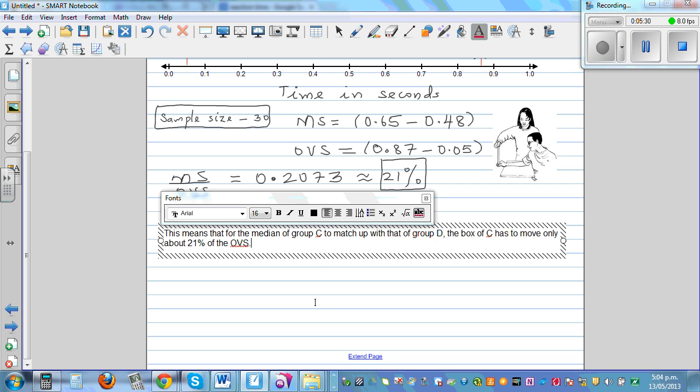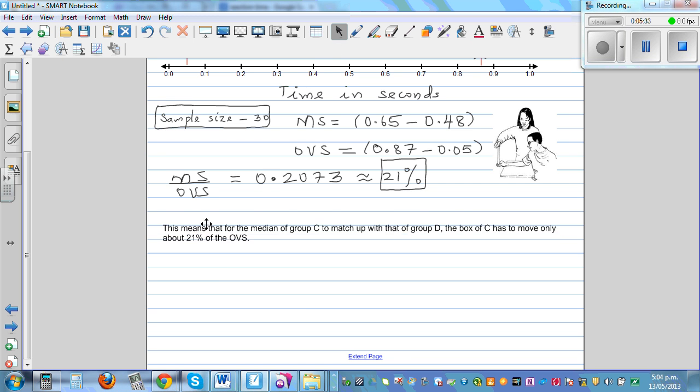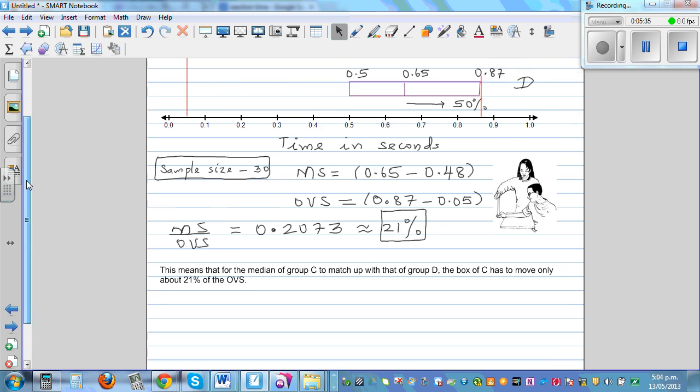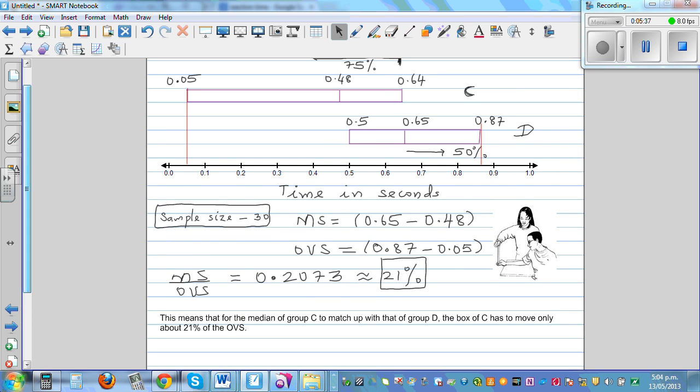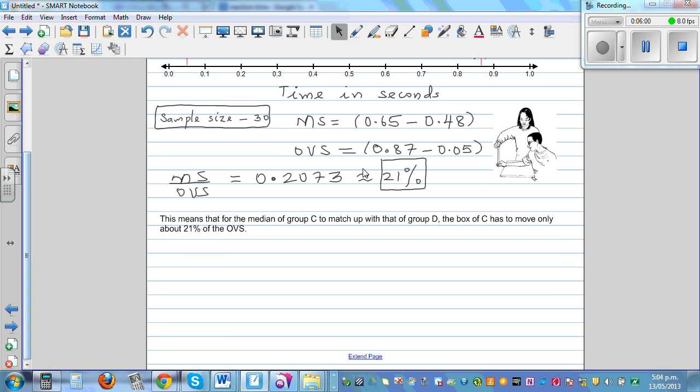And that is not big enough to make the call that one is better than the other. So what I was saying, that the median shift is only 21% of the overall visible spread. That means for this box C, if the median of this has to match with the median of D, this has to move only 21% of the overall visible spread.